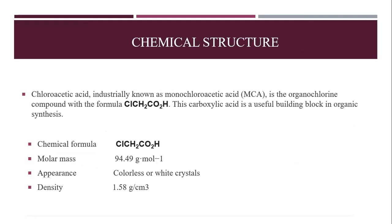Now we will discuss the chemical structure. Chloroacetic acid, industrially known as monochloroacetic acid, is an organochlorine compound with the chemical formula ClCH2CO2H. This carboxylic acid is used in organic synthesis. Its molar mass is 94.49 grams per mole. It is colorless or white crystal in appearance, and its density is 1.58 grams per centimeter cubed.